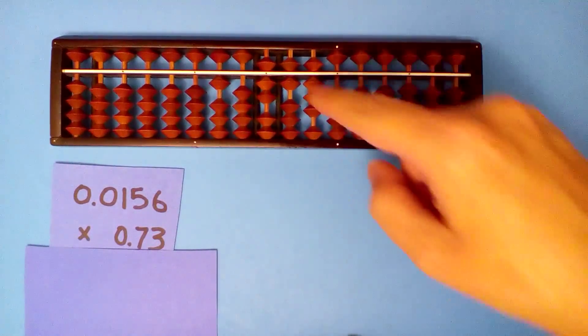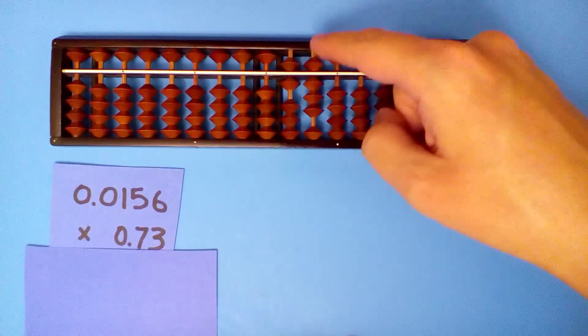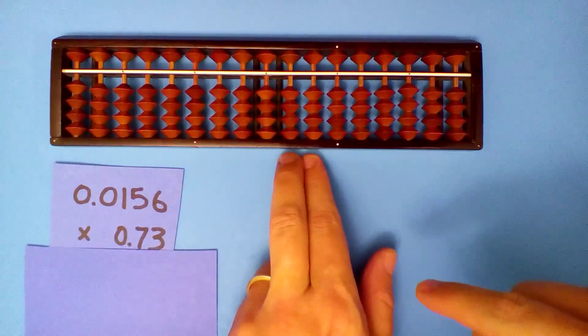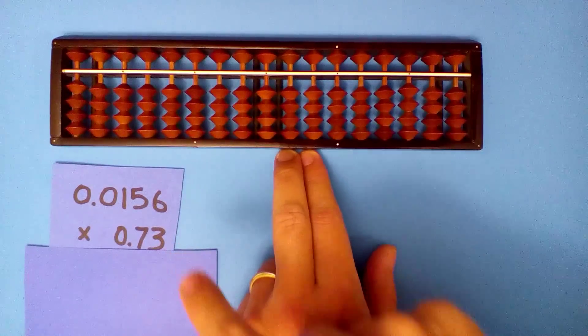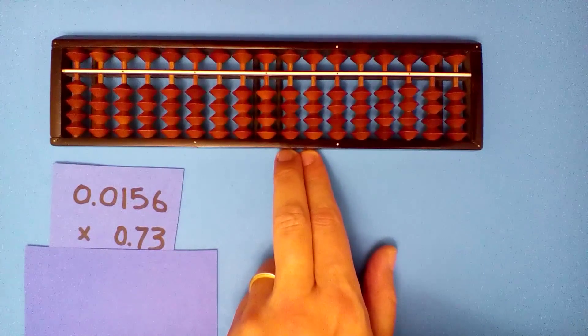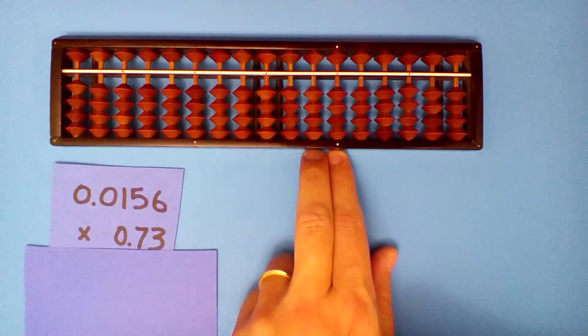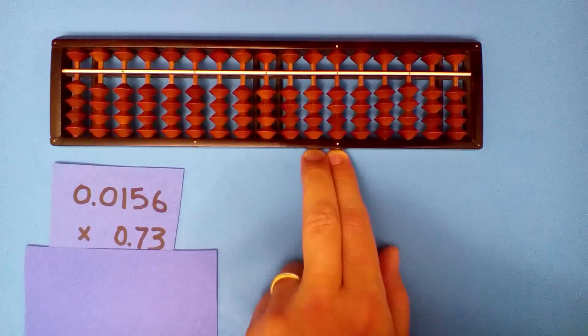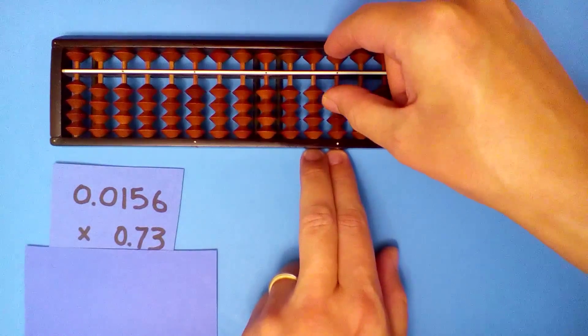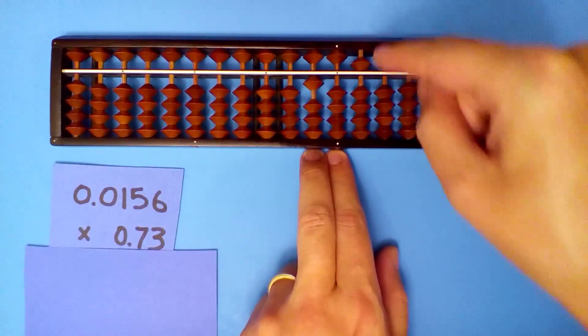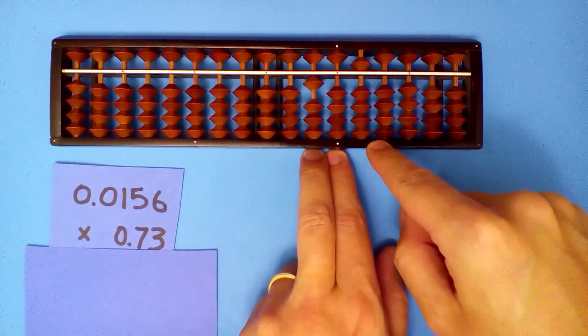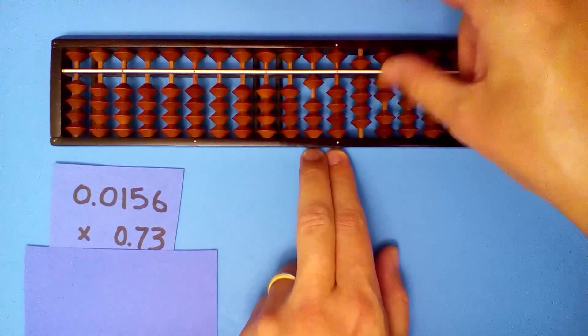What is 0.0156 times 0.73? Turn on the tenths and hundredths. Minus one digit, zero digits for a total of minus one. That means we go one space to the right. Use this seven first. Seven times one, seven. Seven times five, thirty-five. Seven times six, forty-two.